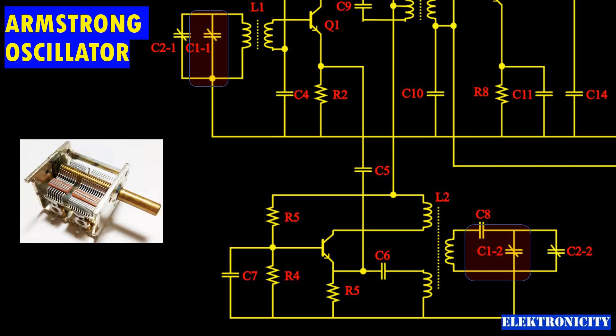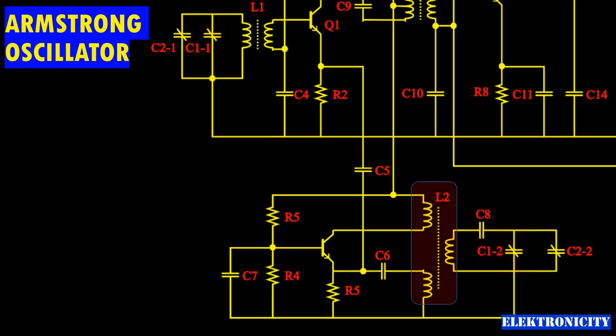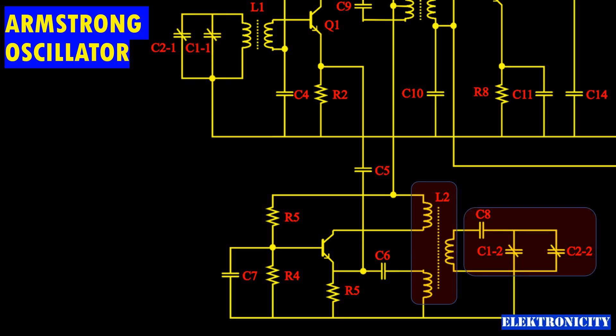The LO frequency is set by L2 and the combined capacitance of C12 and C22 in series with C8. L2 also provides feedback for oscillations from the collector to the emitter, with the base grounded for RF through C7.